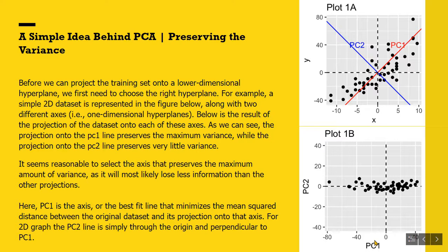Below is the result of the projection of the dataset onto each of these axes. As we can see, the projection onto the PC1 line preserves the maximum variance, while the projection onto the PC2 line preserves very little variance. It seems reasonable to select the axis that preserves the maximum amount of variance, as it will most likely lose less information than the other projections.